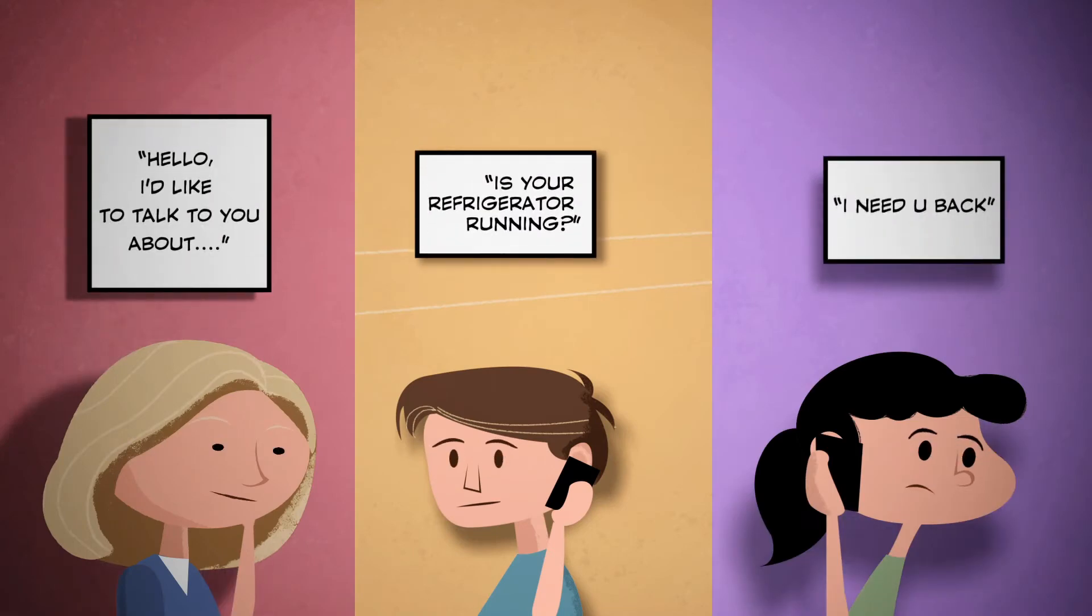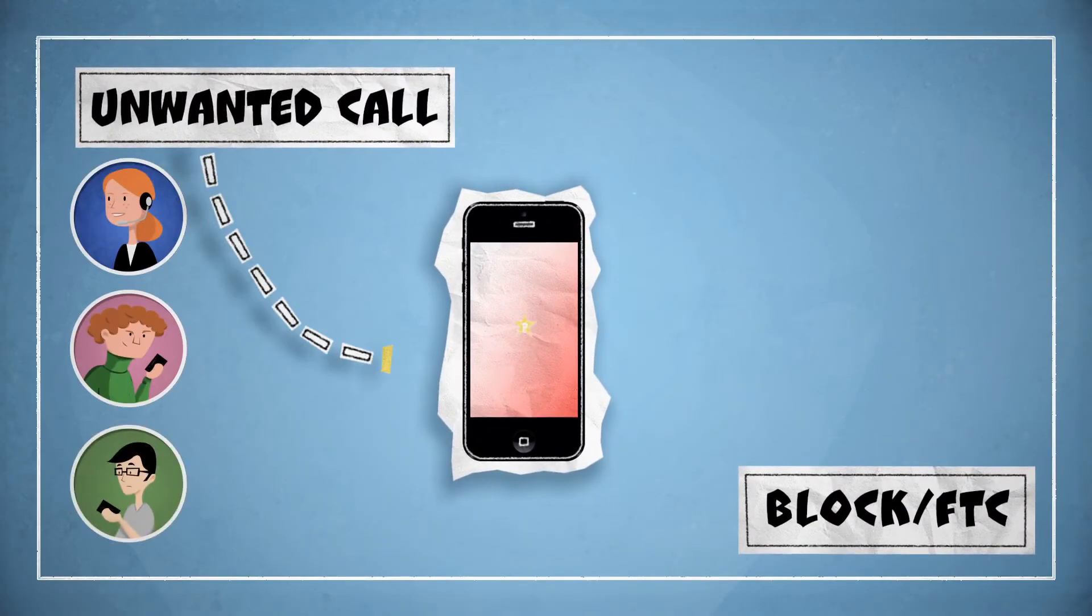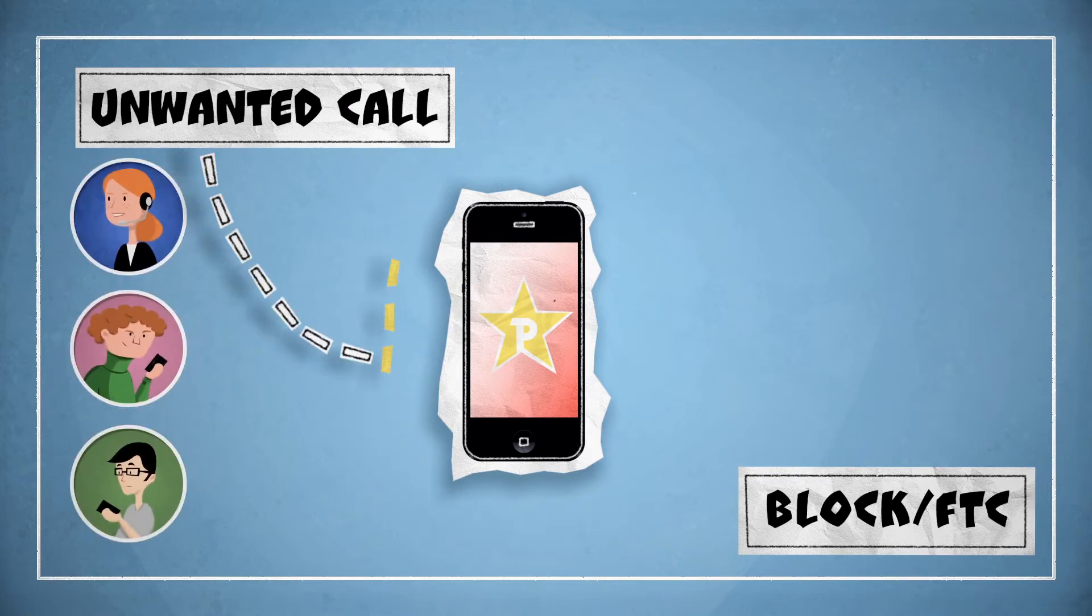Take control now and make your smartphone even smarter. With PrivacyStar Instant Reverse Number Lookup, you decide what to do, instantly. Block the call or send it to the FTC.